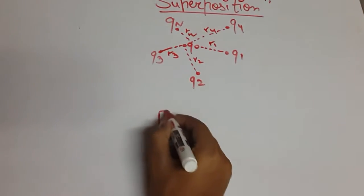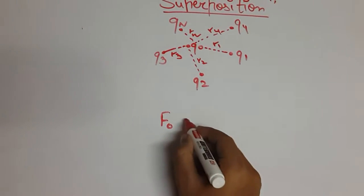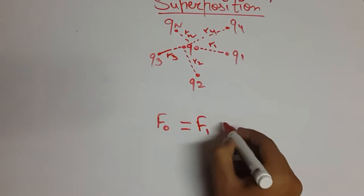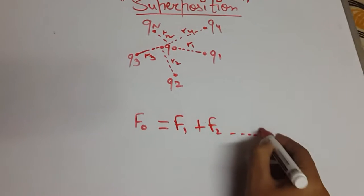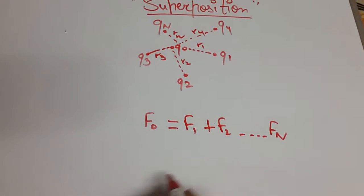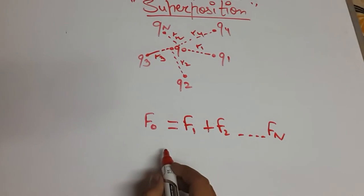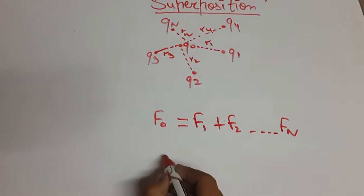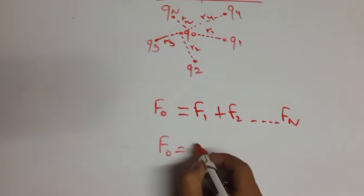Now the total force which is f0 on the charge q0 would be force 1 plus force 2 till force n. From before we know that we got the equations so by adding all of them we will get